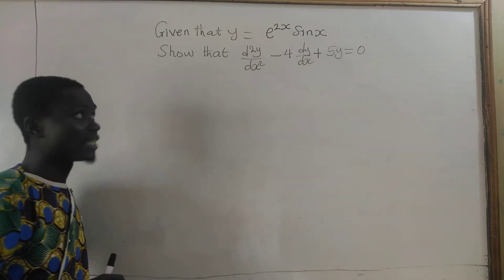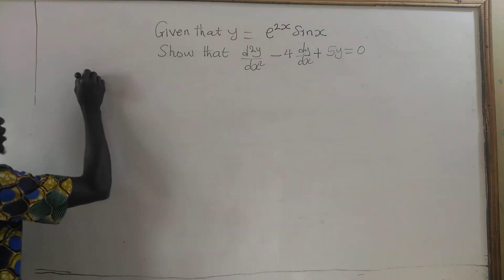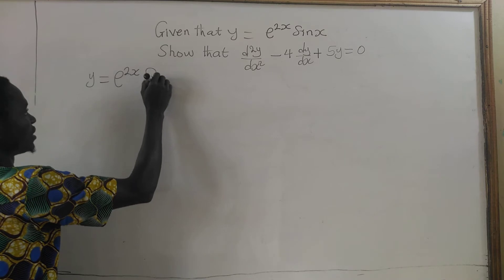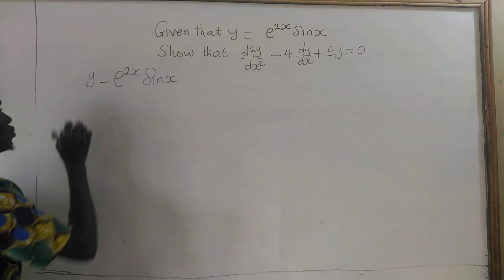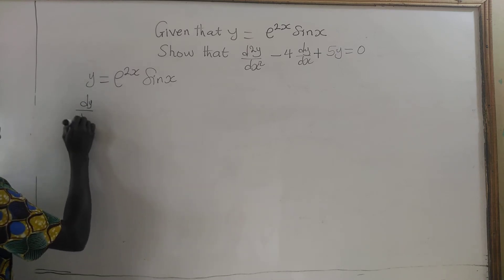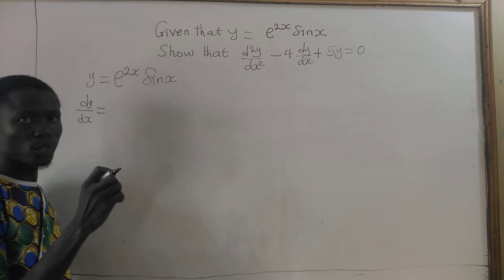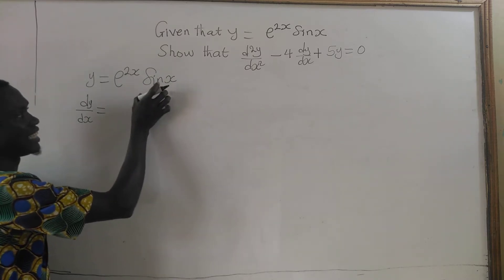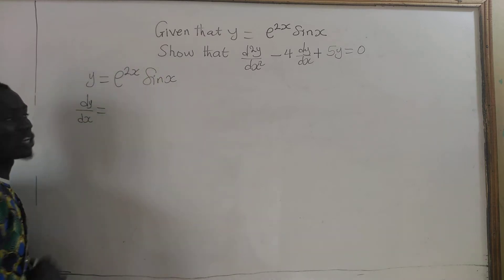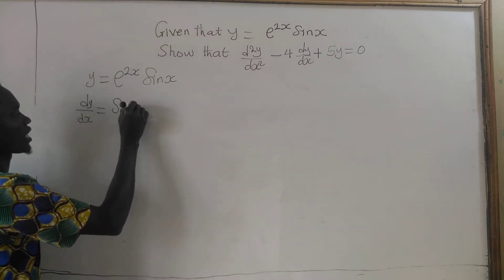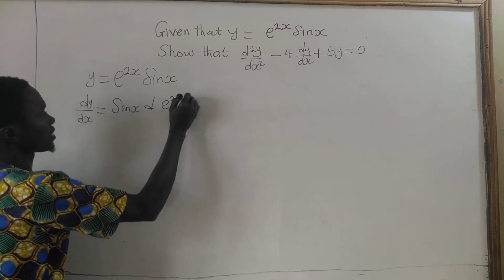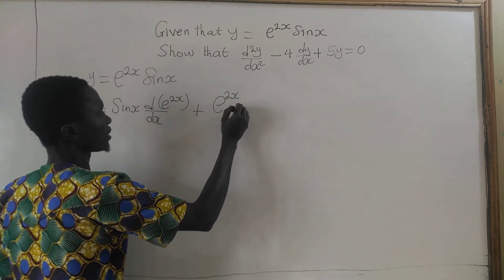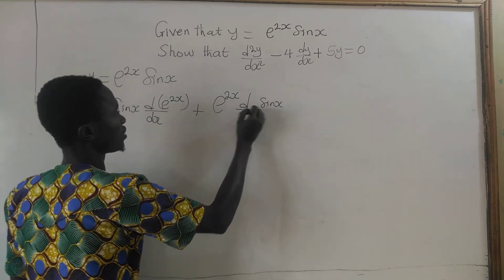Now let's look at the question in detail. We have y equal to e to the power 2x times sine of x. We are going to use the product rule. So we have dy/dx equal to — from the product rule — we differentiate e to the power 2x and maintain sine x, plus the derivative of sine x times e to the power 2x. So here, we maintain sine of x times the derivative of e^(2x) plus e^(2x) times the derivative of sine x.